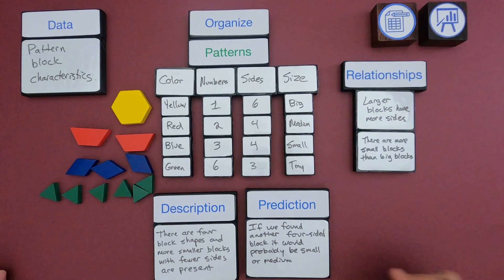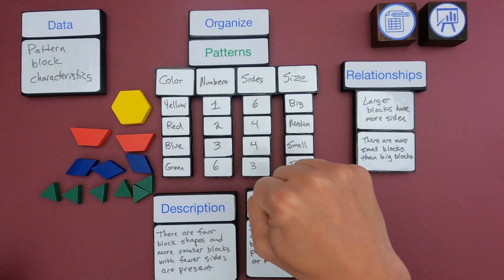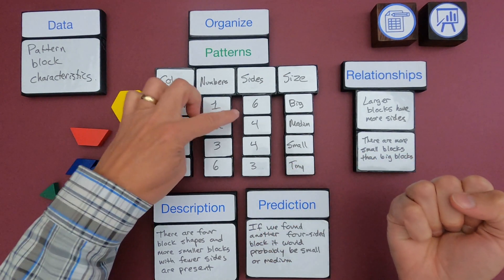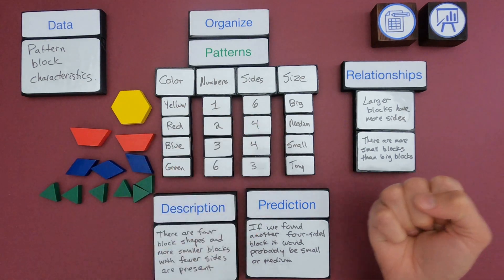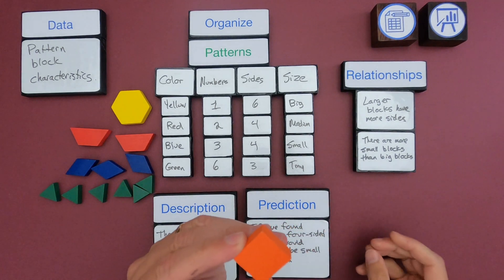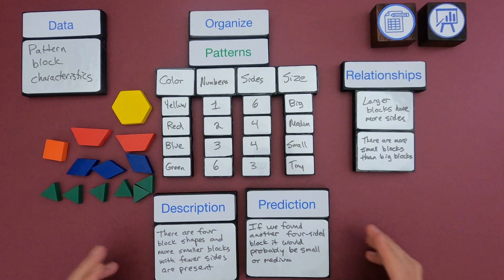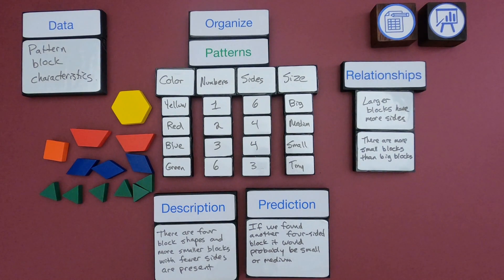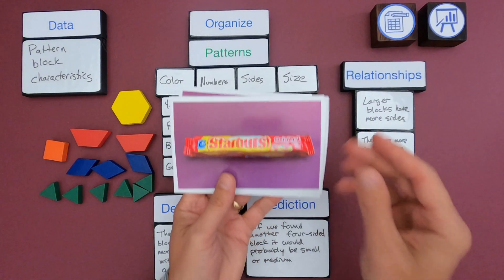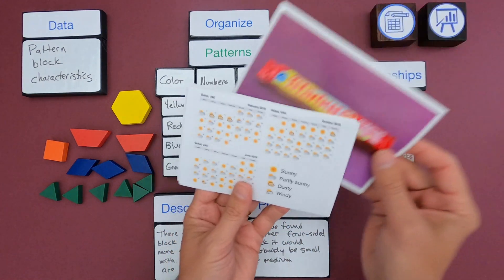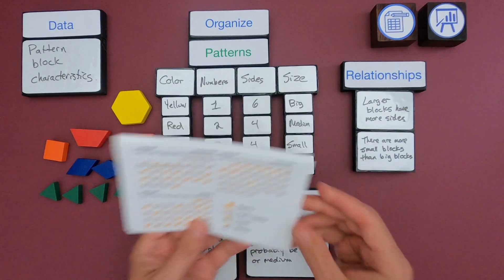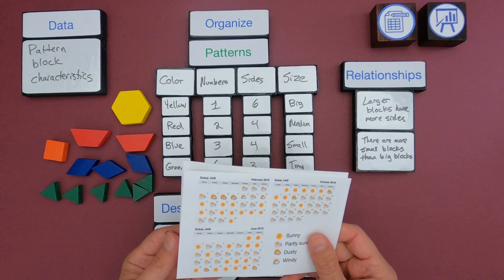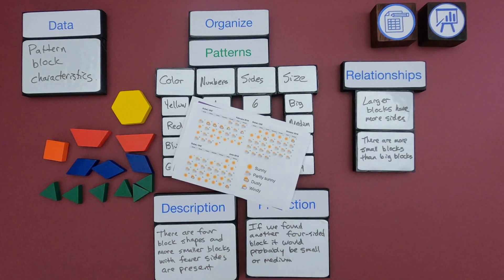The description I wrote is: as we look at the whole thing, there are four different block shapes — we could also say block colors — and there are more smaller blocks with fewer sides present. For the prediction I wrote: if we found another four-sided block, it would probably be small or medium. In my hand I have another block with four sides. Reading the data table, the two four-sided blocks were medium and small, and this square does fit — so that prediction tends to fit the data. Once you can follow this pattern of organizing, looking for relationships, describing, and predicting, you can move on to looking at patterns in candy like Starburst or real weather data. It's just information, and if we organize it, it'll make more sense.